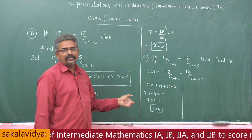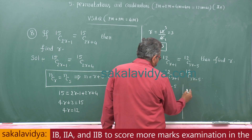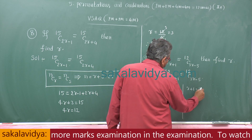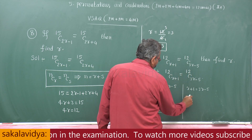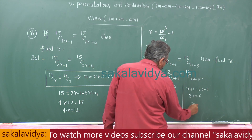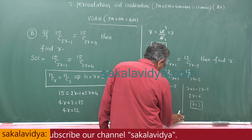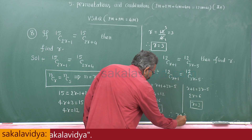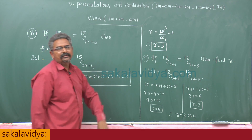Case 2: r plus 1 equals 3r minus 5, so 2r equals 6, giving r equals 3. Therefore, r equals 3 or r equals 4.